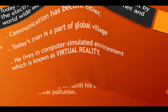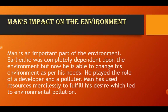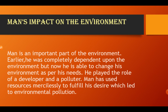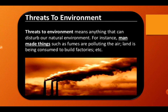Man is an important part of the environment. Earlier, he was completely dependent upon the environment, but now he is able to change his environment as per his needs. He plays the role of both a developer and a polluter — he developed things and also started polluting the environment. Man has used resources mercilessly to fulfill his needs as well as his greed, which led to environmental pollution.